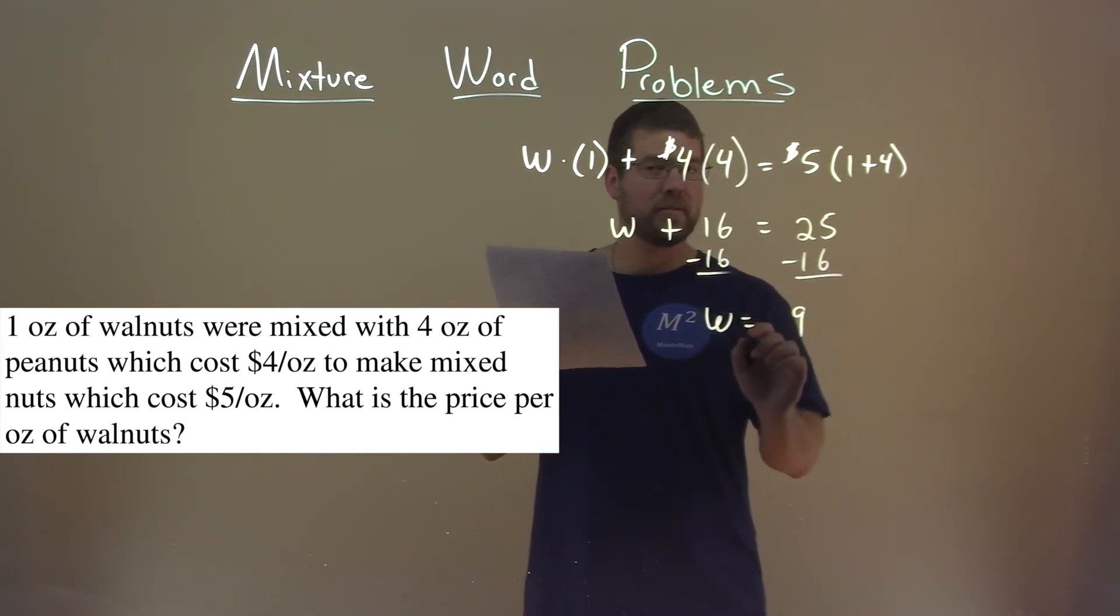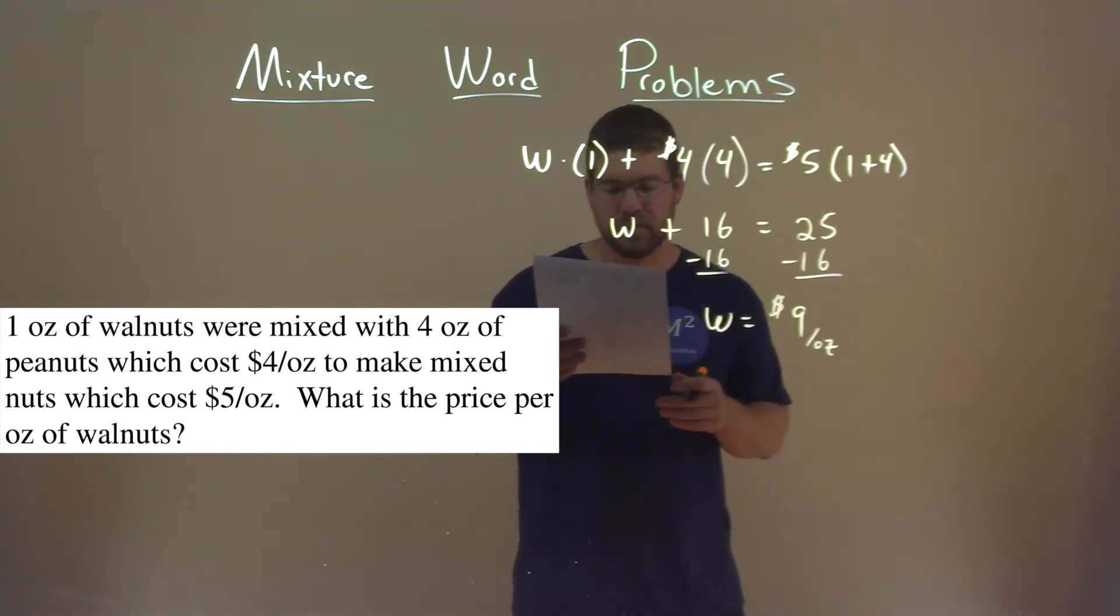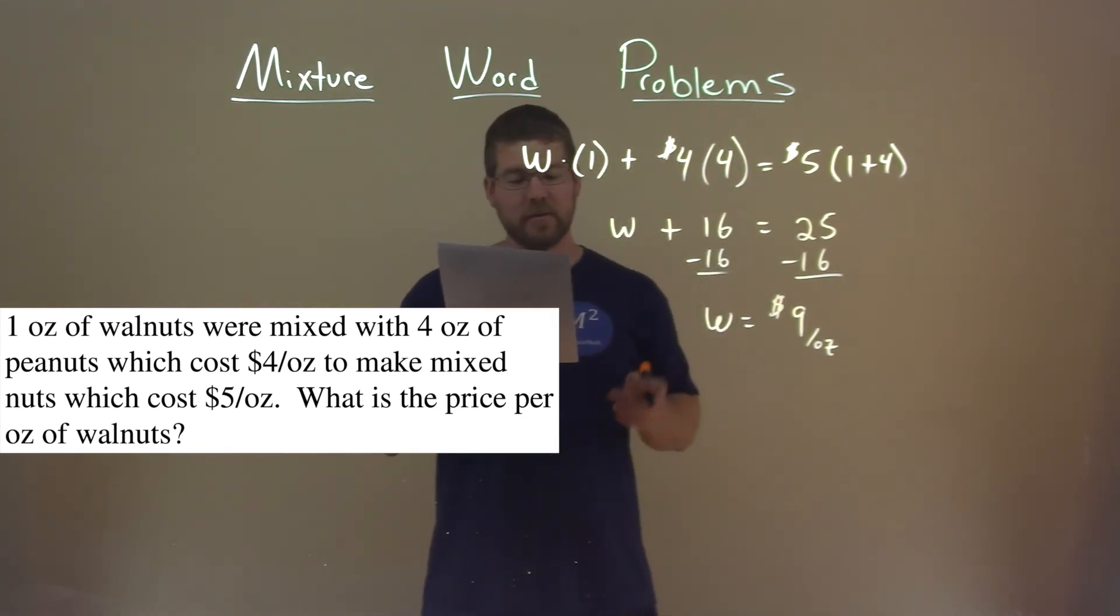And so that is, well, what does it mean in the context of the problem? Nine dollars per ounce for the price of the walnuts. So that is our final answer.